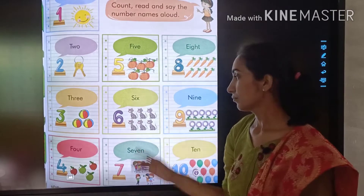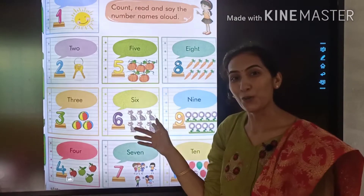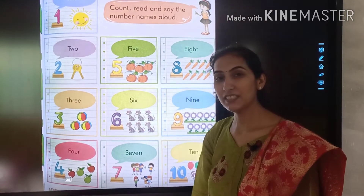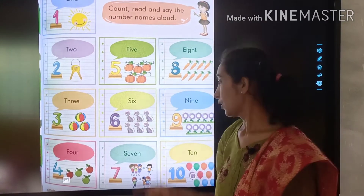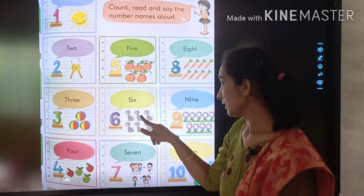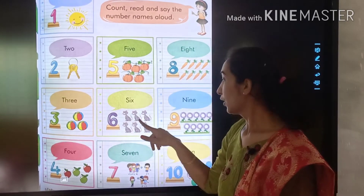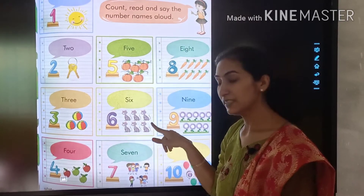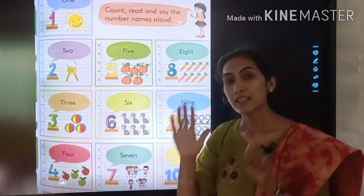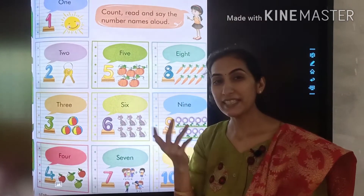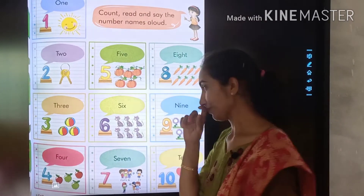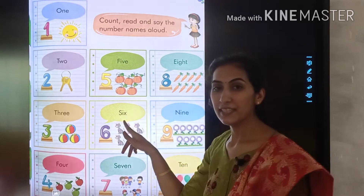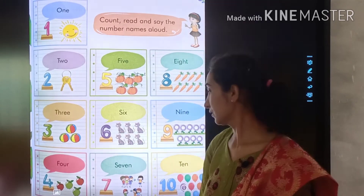Then, meow — cats! How many cats do you see here? 1, 2, 3, 4, 5, 6. 6 cats. S-I-X, 6 cats.